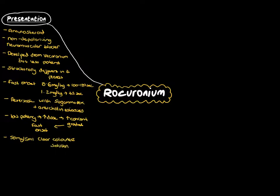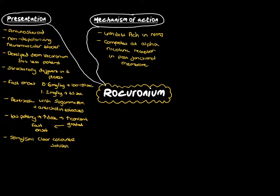The mechanism of action of rocuronium is similar to all of the neuromuscular blocking drugs. It inhibits acetylcholine at the neuromuscular junction. It does so by competitively binding the alpha-4 subunit of the nicotinic acetylcholine receptor in the postjunctional membranes.